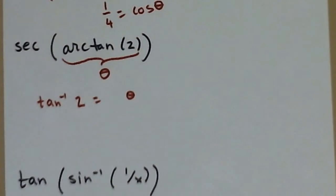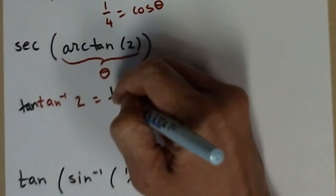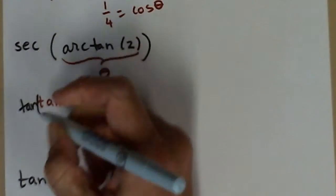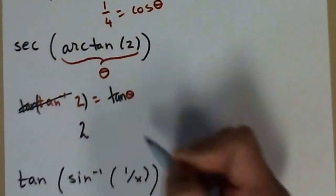I have inverse tangent of two equals theta. If I do the tangent of both sides, what happens on the left is the tangent and inverse tangent cancel, and we get two.